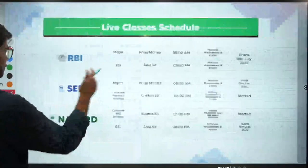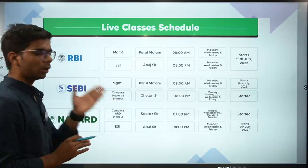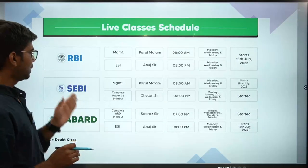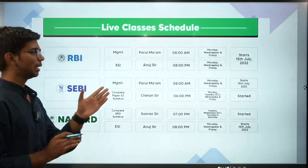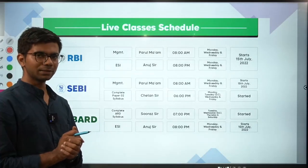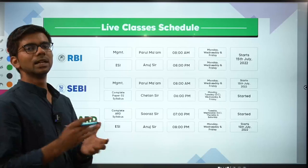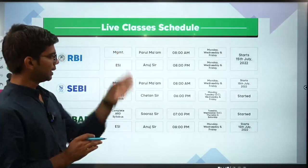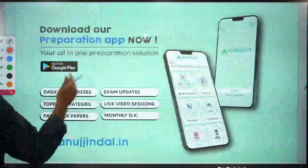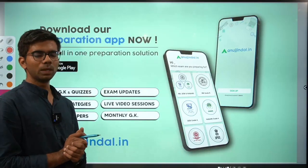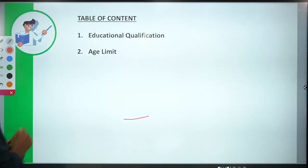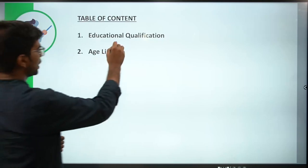Before we start, many of you may already know that we have launched live classes for three important examinations: RBI Grade B, SEBI Grade A, and NABARD Grade exam. Live classes have their own benefits, and the entire schedule — timings, days, everything — is mentioned. We also have an application which can be downloaded from Google Play, very beneficial for all aspirants. In today's session I'll majorly talk about two points: educational qualification and age limit.